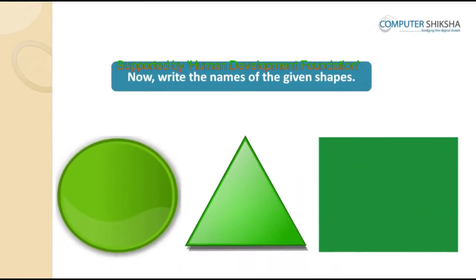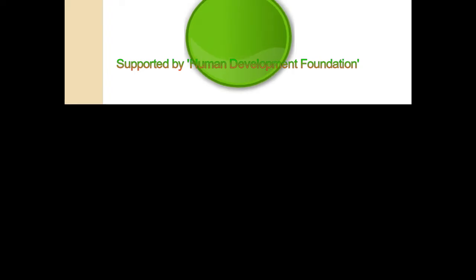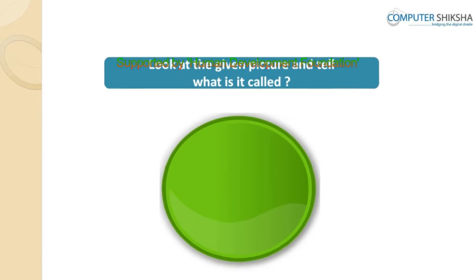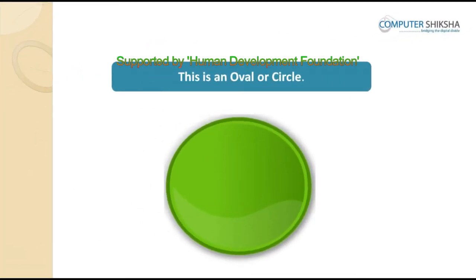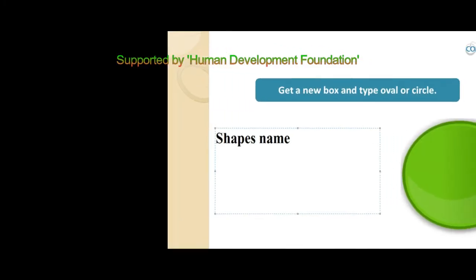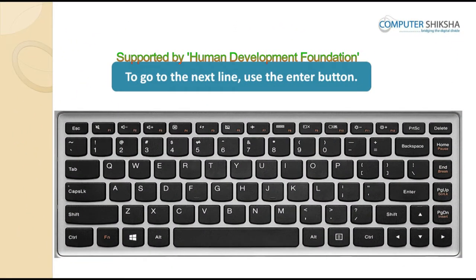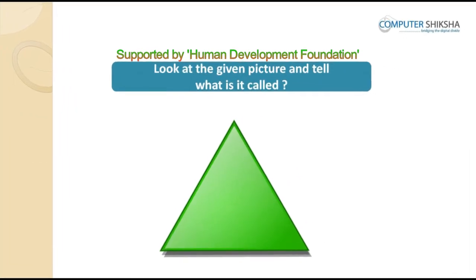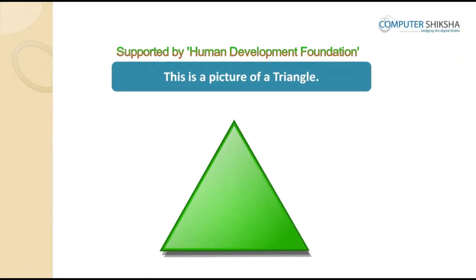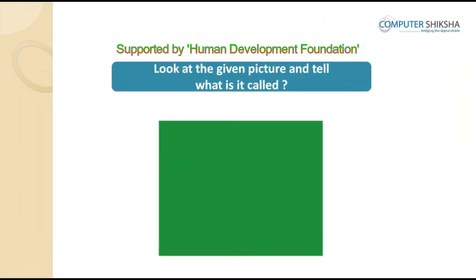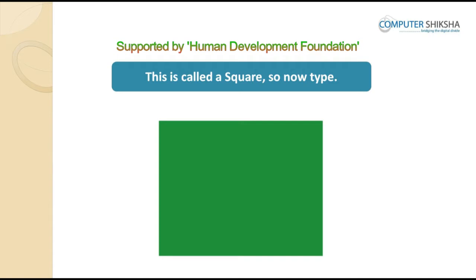Now, write the names of the given shapes. Look at the given picture and tell what it is called — this is an oval or circle. Get a new box and type oval or circle, then go to the next line using the Enter button. Look at the next picture — this is a picture of a triangle. Go ahead and type triangle. Look at the next picture — this is called a square. Go ahead and type it.